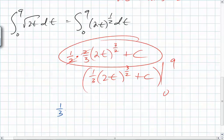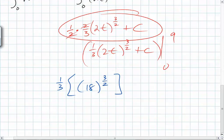So you end up with 1 third times 18 to the 3 halves, something like that. So what do you end up with? Well, it's 18 to the minus 0. So what do you have here? The square root of 18 to the what power?